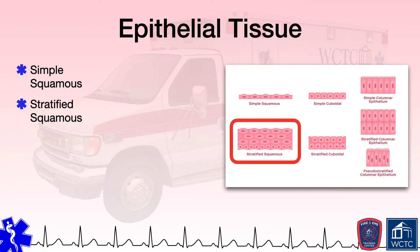Stratified squamous epithelial tissue is comprised of multiple layers of cells designed to protect underlying body structures. These tissues are located on the outer layer of the skin, as well as the surface lining of the mouth, esophagus, vagina, and anus.